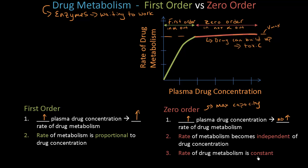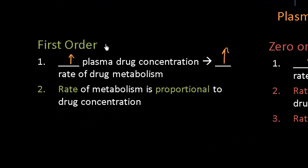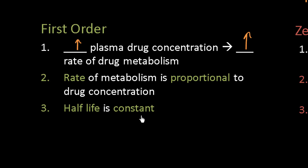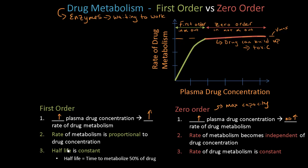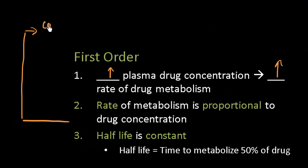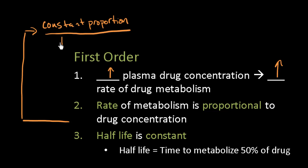The third thing to remember for first order kinetics is that while the rate of drug metabolism is not constant, there is a term that is constant: the half-life. The half-life is the time it takes to metabolize 50% of the drug. For first order kinetics, the in is proportional to the out, meaning we are metabolizing a constant proportion of drug per unit time.